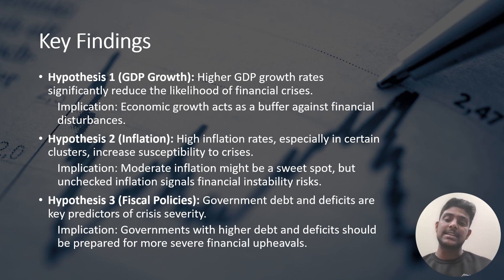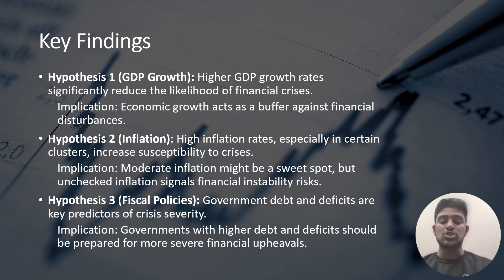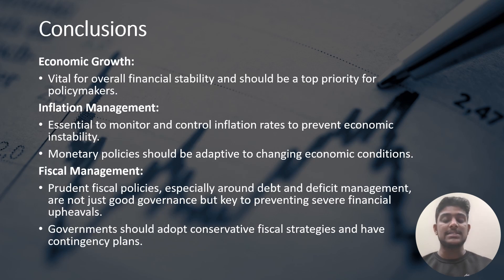Regarding fiscal policy: our decision tree analysis revealed that government debt and deficits were profound predictors of the intensity of a financial crisis. In simple terms, nations grappling with high debt and deficits might face more intense financial storms.